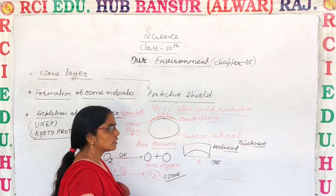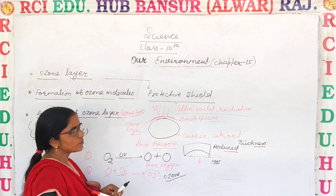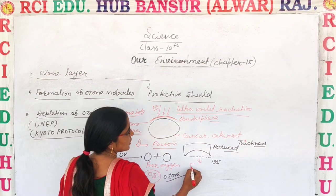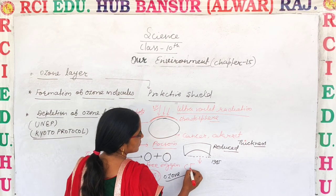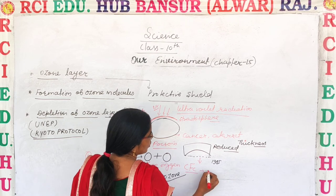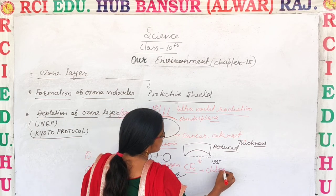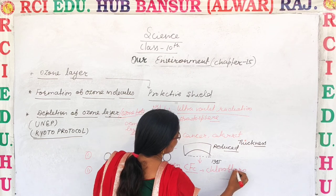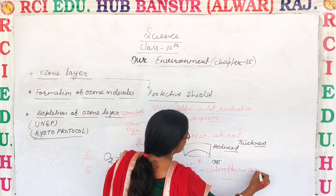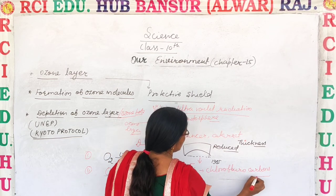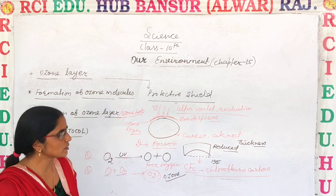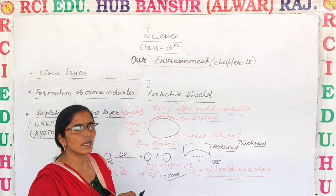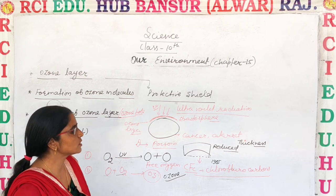The ozone layer thickness decreased due to the use of certain chemicals. The main culprit was CFCs — chlorofluorocarbons. CFCs are chemicals or gases which are used in refrigerators, fire extinguishers, and similar appliances.